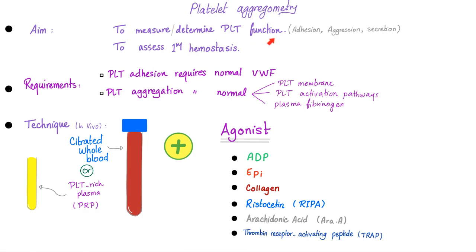What's the aim of aggregometry? To measure or determine platelet function — meaning adhesion, aggregation, and secretion — in order to assess primary hemostasis. Requirements: platelet adhesion requires normal von Willebrand factor. Platelet aggregation requires a normal platelet membrane, a normal platelet activation pathway, and plasma fibrinogen. Now, it's called platelet aggregometry, so why is it also testing adhesion? Because in order for platelets to aggregate, they need to adhere first.